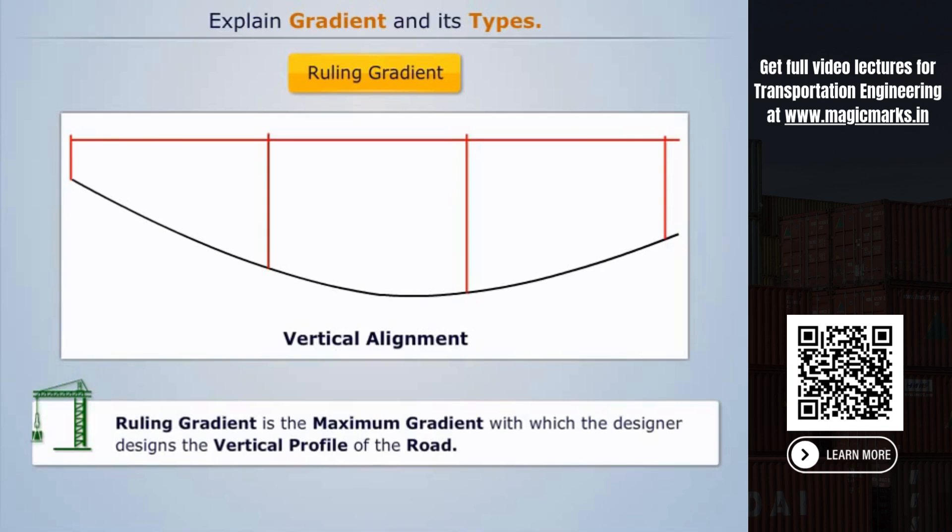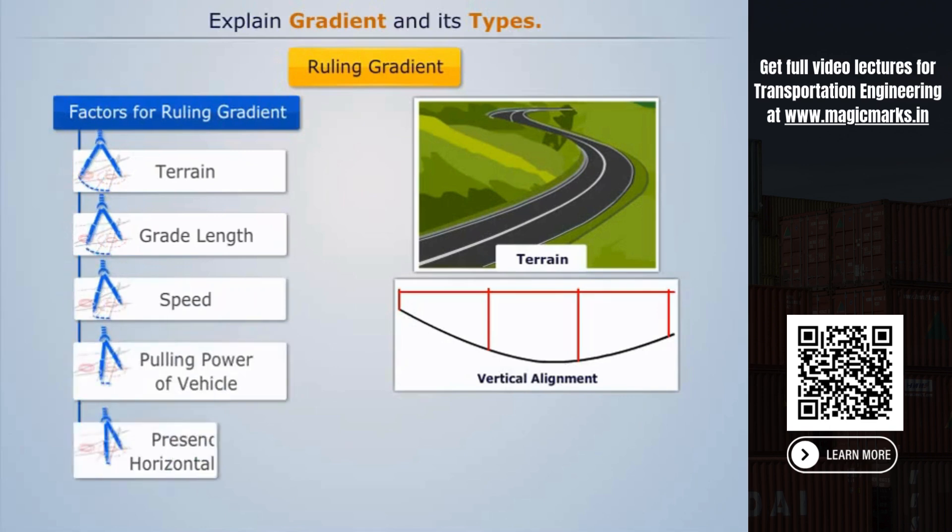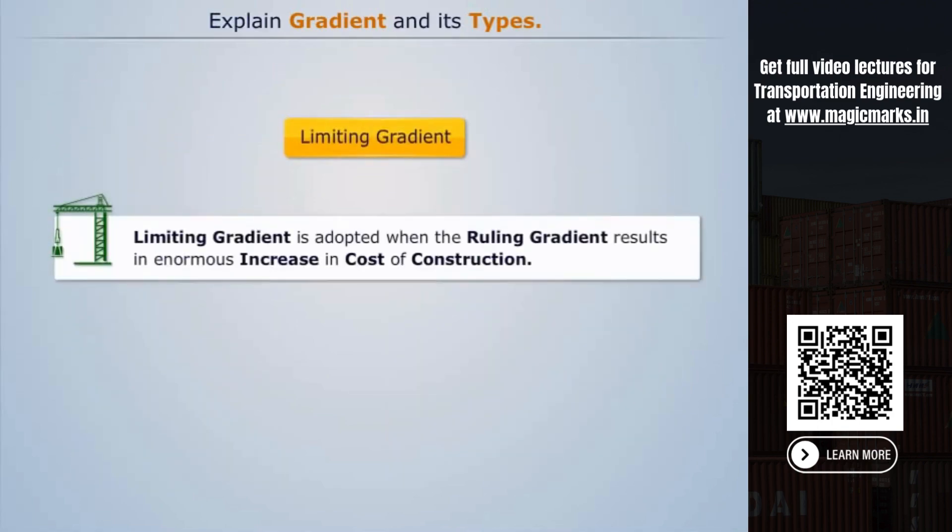Limiting gradient is adopted when the ruling gradient results in an enormous increase in cost of construction.